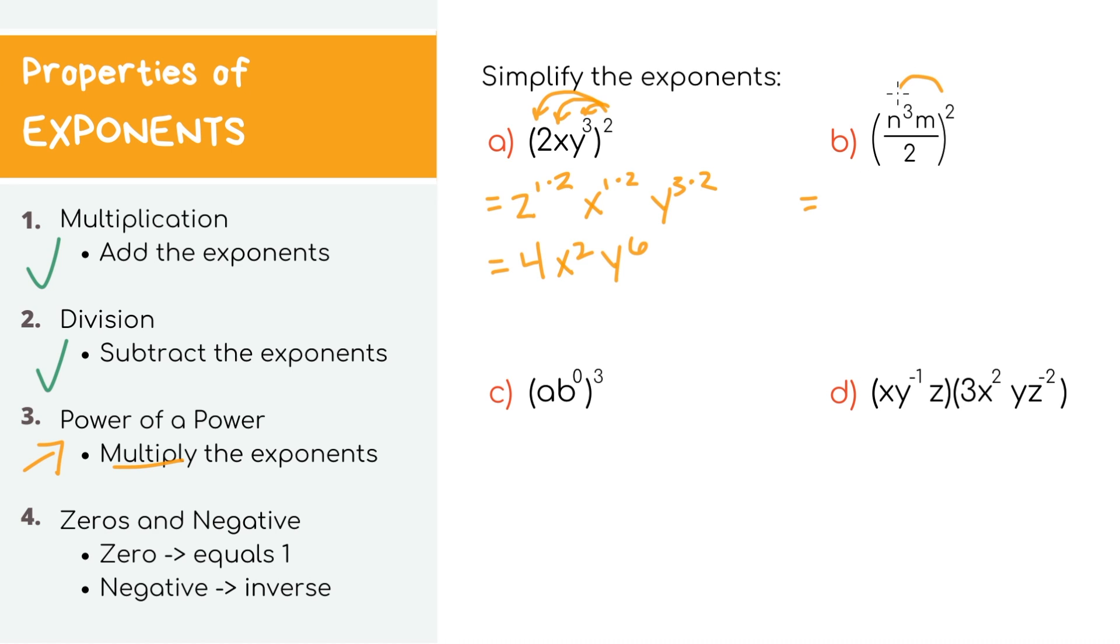For the next example, again, let's just distribute out the power of the power, which is 2. Since our n is already raised to the third power, let's multiply the exponent, so we get n to the 3 times 2.